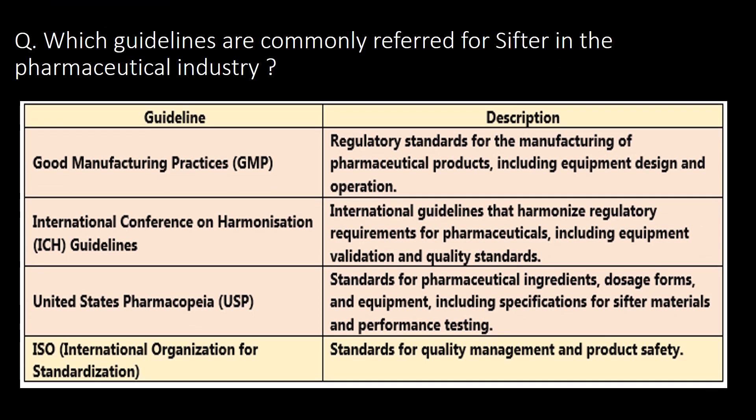Which guidelines are commonly referred to for shifters in the pharmaceutical industry? Good Manufacturing Practices (GMP), International Conference on Harmonisation (ICH) guidelines, USP guidelines, and ISO guidelines are the commonly referred guidelines for shifters in the pharma industry.